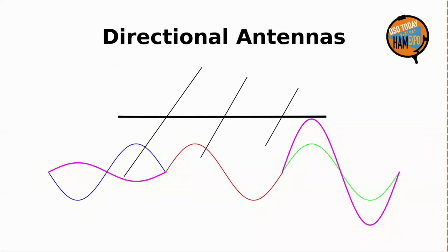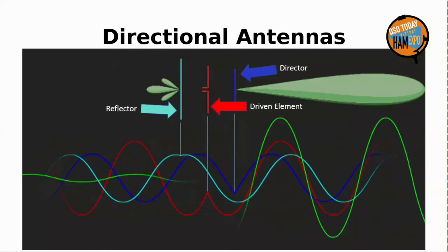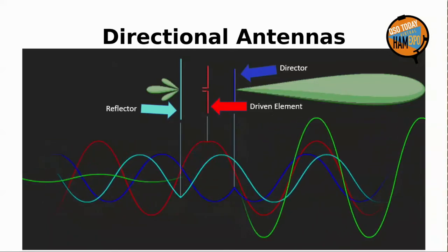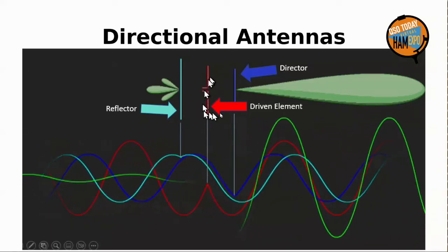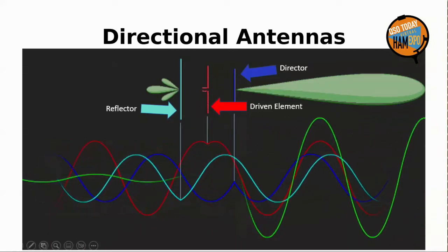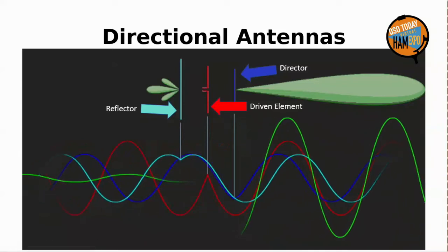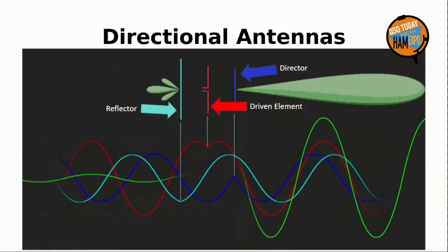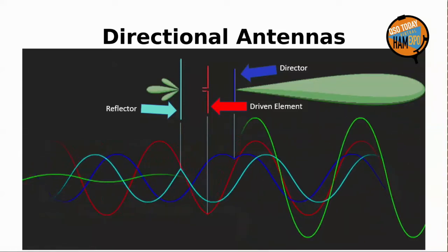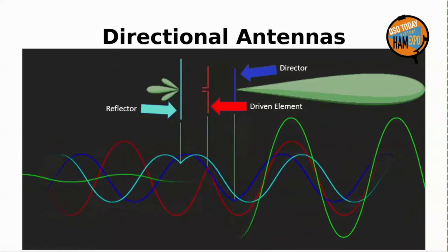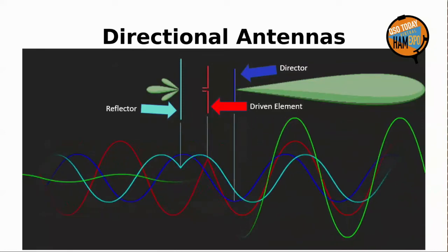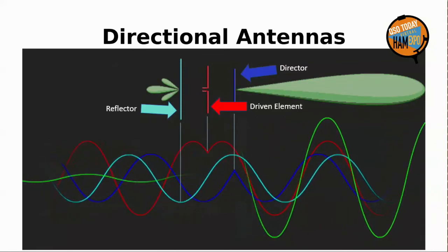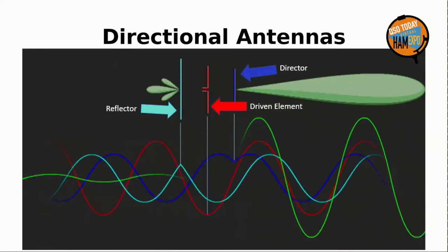Here's a cool animation of this process. The radiator is right there in the center, and the signal from that is shown in red. The total signal going out the front and back of the antenna is shown in green. Pretty cool — Yagi antenna.